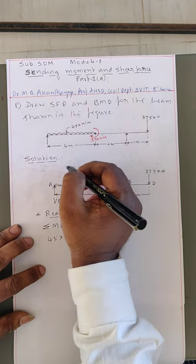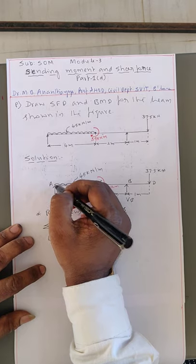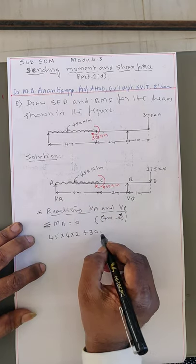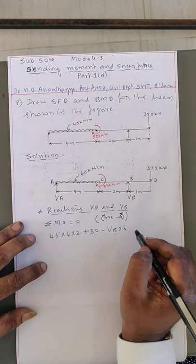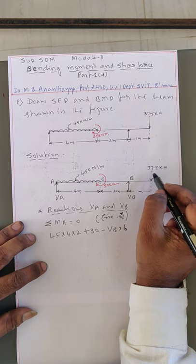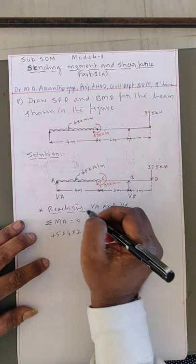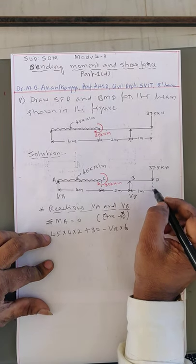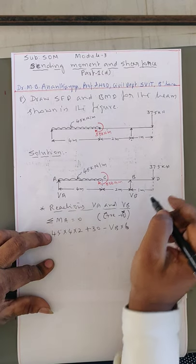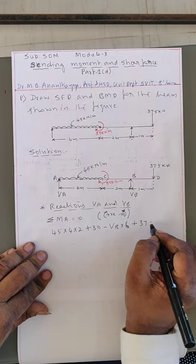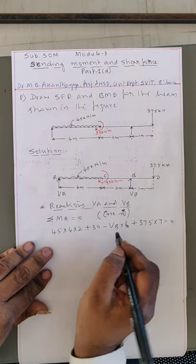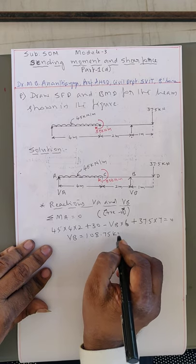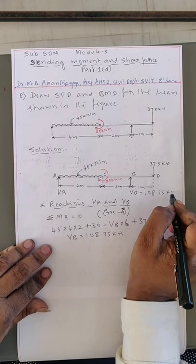VB creates an anti-clockwise moment about A, so it is minus VB × 6. The point load of 37.5 kilonewton creates a clockwise moment about A: plus 37.5 × 7 (distance = 4 + 2 + 1 = 7 m). Setting the sum equal to 0, we get VB = 108.75 kilonewton.